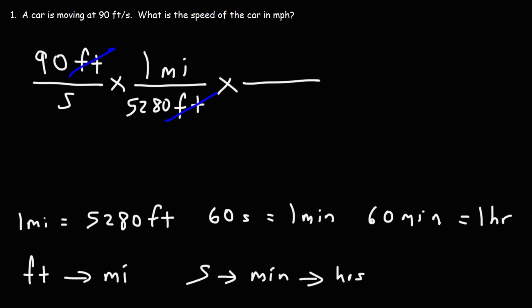Now in the next step we're going to convert seconds to minutes using this conversion factor. Notice that we have seconds on the bottom. I need to put the unit seconds on top. So I'm going to put this part, 60 seconds, on top and then the other part, one minute, on the bottom of the third fraction. So now we can cross out the unit seconds.